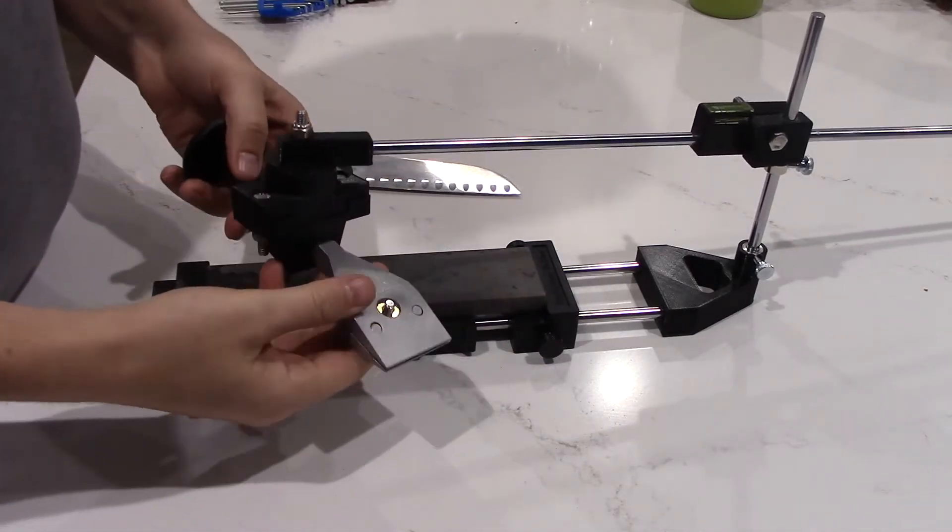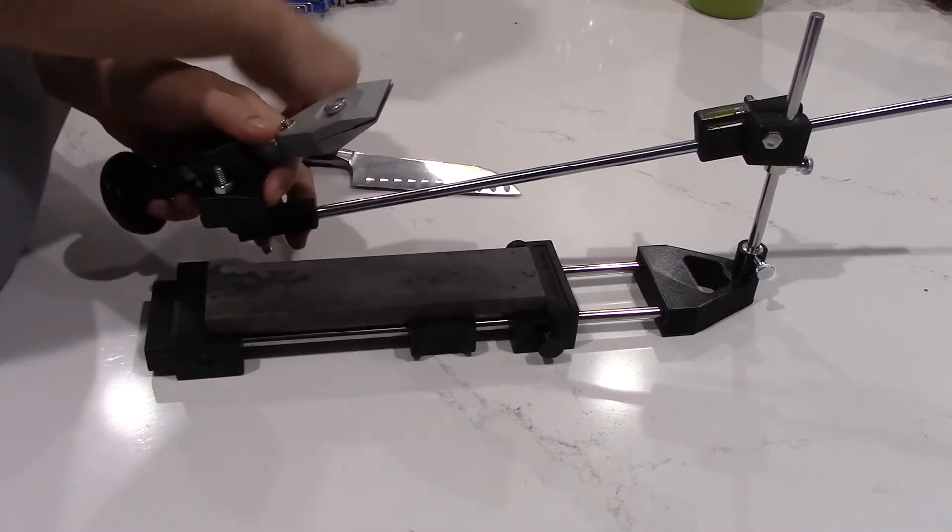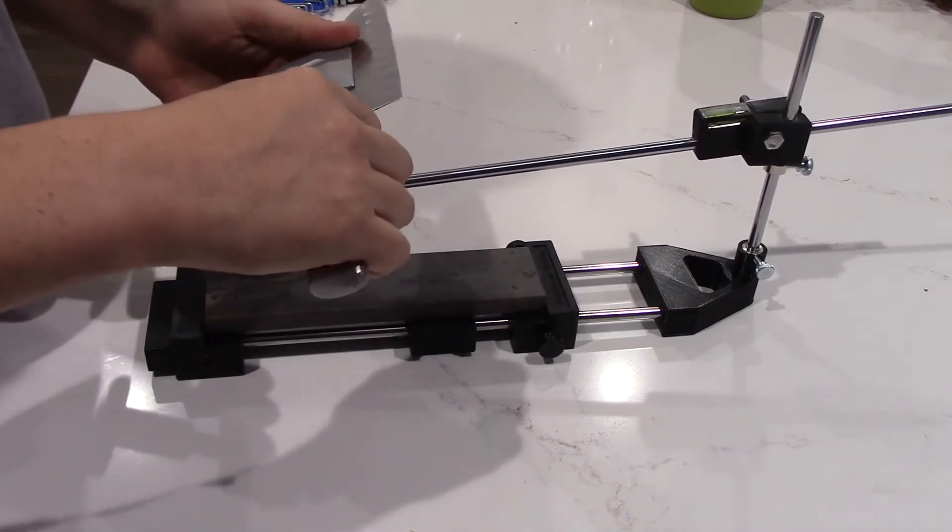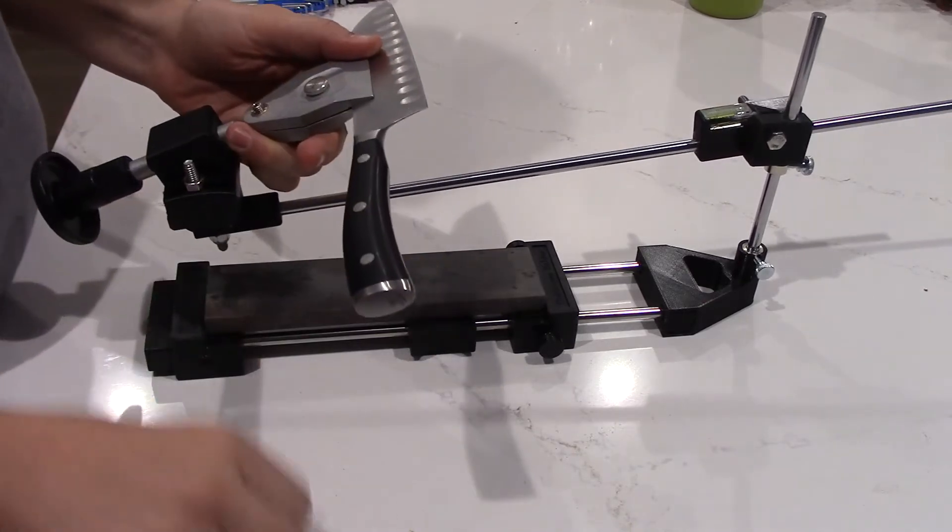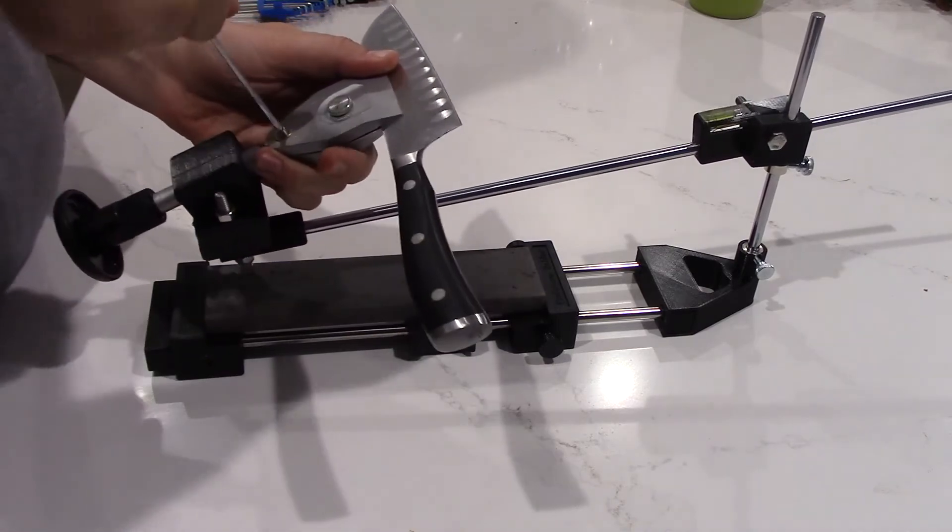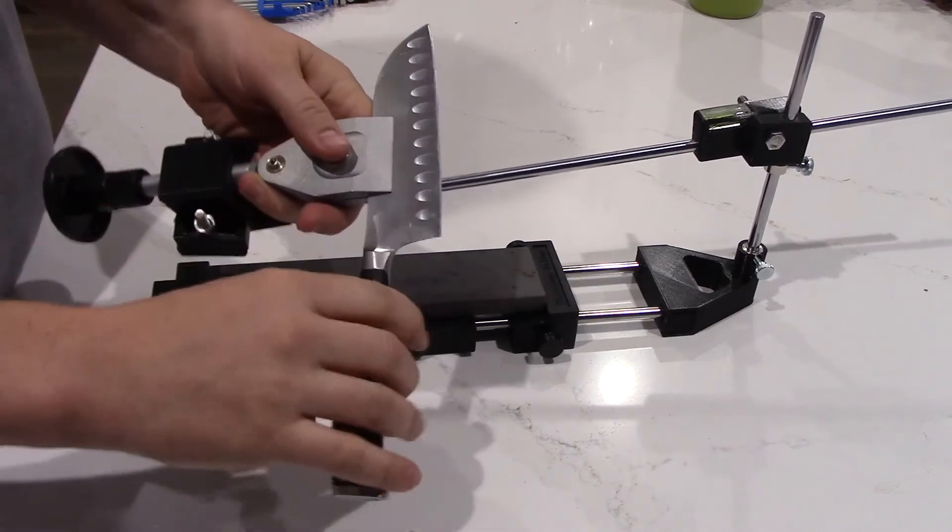All right, so this is the Tormach small knife holder. So I'm going to put my knife in here and tighten this. The knife is now secure in here. It's very sturdy.